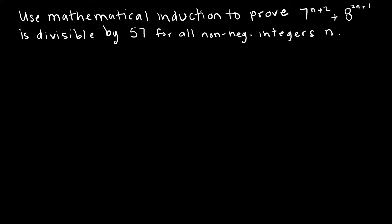This one's going to be tricky because, as you can see, I don't have an equation. So I'm going to start the same way I normally do. I'm going to say let P of n represent what I'm trying to show, which is that 7 to the n plus 2 plus 8 to the 2n plus 1 is divisible by 57, for all non-negative integers.